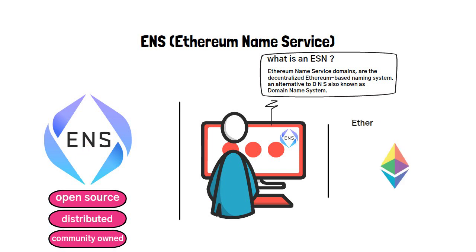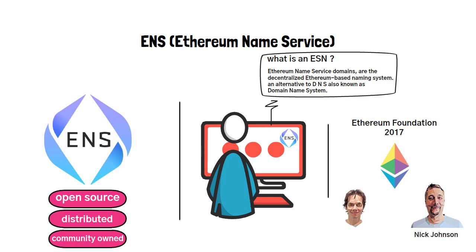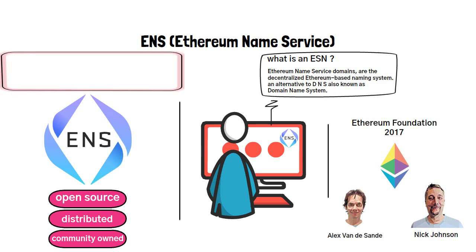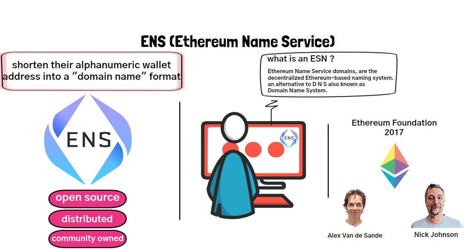ENS was developed at the Ethereum Foundation in early 2017, proposed and created originally by developers named Nick Johnson and Alex Bandesand. An ENS domain essentially allows a user to shorten their alphanumeric wallet address into a domain name format, and is often used as an identity on social media channels like Twitter. This domain name address can then be used instead of a wallet address to send funds via an exchange or Web 3.0 wallet.